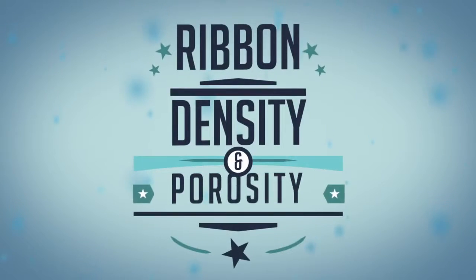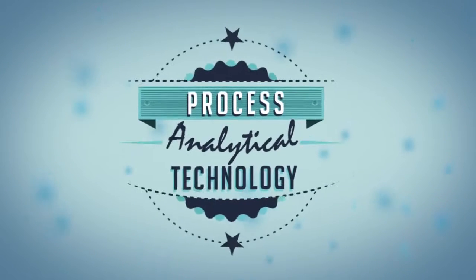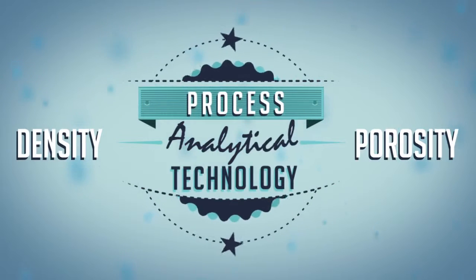Ribbon density and porosity affect both downstream processing and final product attributes, one of the most important being tablet dissolution rate. When implementing PAT, density and porosity measurements of roller compacted ribbons can help ensure consistent output of the roller compaction unit operation, alleviating downstream waste and product failures.